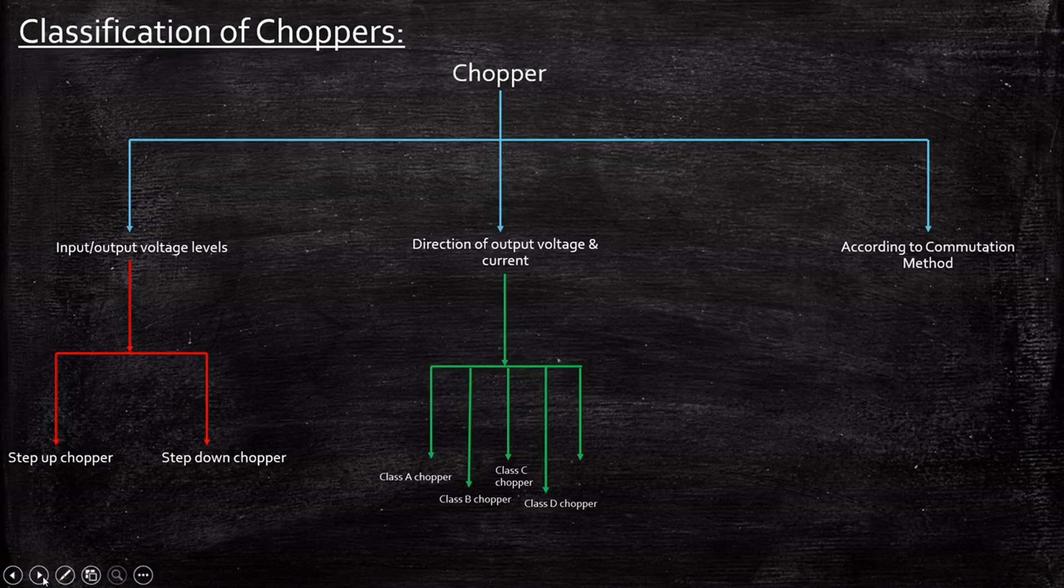We also have class D chopper where the output voltage is positive or negative and the current is always positive and it operates in first and fourth quadrant. We also have class E chopper where the output voltage can be positive or negative and the operation is in all four quadrants of operation. So each of these circuits we will be going in detail as we go further.